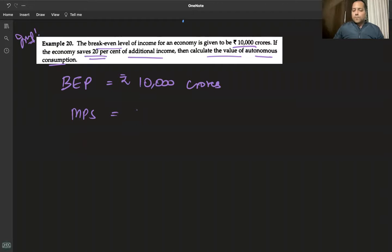MPS is 20 percent, which equals 0.20. So MPC will be 1 minus MPS, which equals 1 minus 0.20, equals 0.80.